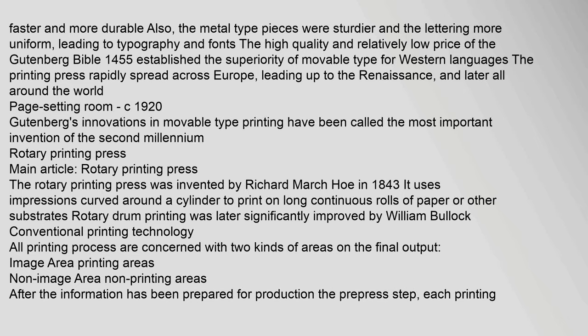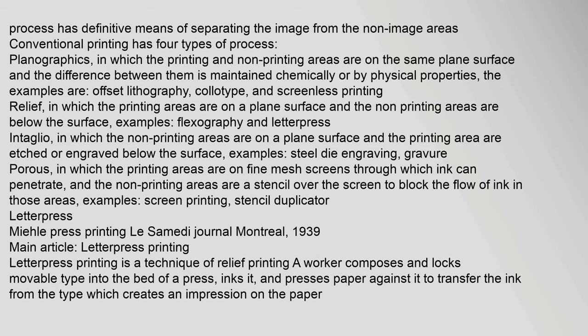All printing processes are concerned with two kinds of areas on the final output: image areas (printing areas) and non-image areas (non-printing areas). Conventional printing has four types of process: planographics, where printing and non-printing areas are on the same plane surface maintained chemically or by physical properties (examples: offset lithography, colotype, screenless printing); relief, where printing areas are raised above the non-printing surface (examples: flexography, letterpress); intaglio, where printing areas are etched below the surface (examples: steel die engraving, gravure); and porous, where ink penetrates a fine mesh screen blocked by a stencil in non-printing areas (examples: screen printing, stencil duplicator).